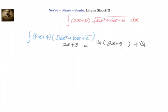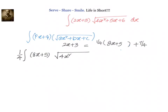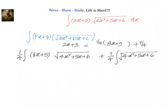So, the given problem can be written as (1/4) integral of (8x + 5) into square root of (4x² + 5x + 6), plus 7/4 integral of square root of (4x² + 5x + 6). If we look at the first part, if we take (4x² + 5x + 6) as t, then we have integral of root(t) dt.